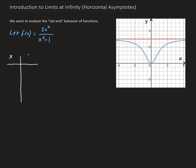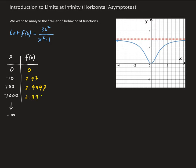The first column is for x and the second column is for f of x. We're going to use the values 0, minus 10, minus 100, minus 1000 — these are approaching minus infinity. Evaluating these into our function gives us 0, then 2.97, then 2.997. So these values are approaching three.